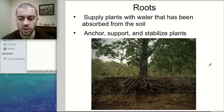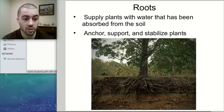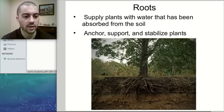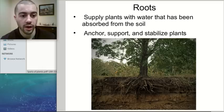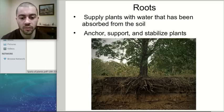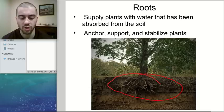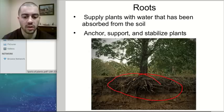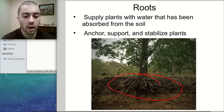The first structure we're going to talk about are the roots of a plant. Most of these structures you should have already heard of, and now we just need to figure out exactly what they do to service the plant. One of the main purposes of roots is to supply the plants with water and other nutrients that have been absorbed through the soil.